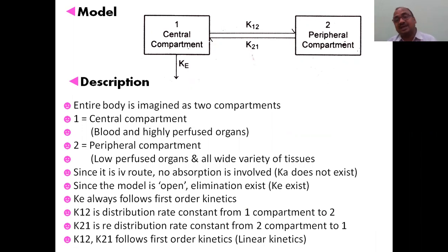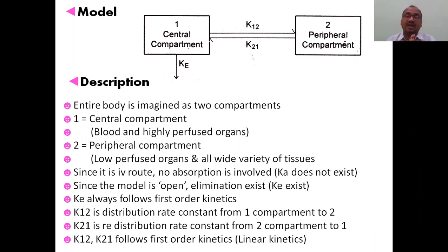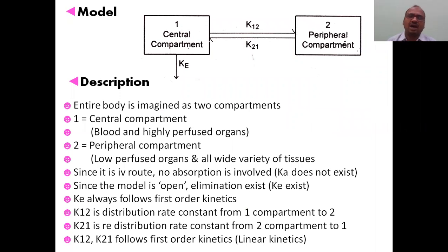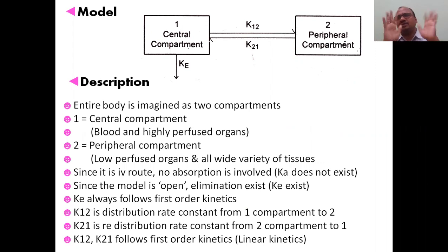The second compartment is the peripheral compartment — it is like a side compartment. It consists of low-perfused organs where blood supply is low, such as muscles, bones, fat tissue, and a wide variety of remaining tissues. All of these are included in the peripheral compartment, and it is always indicated by the number two.